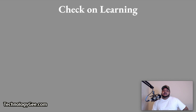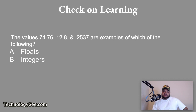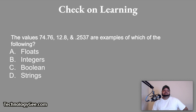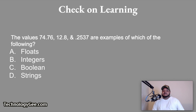Let's do some check on learning, ladies and gentlemen. The values 74.76, 12.8, and 0.2537 are examples of which of the following? Would it be a float, integers, Boolean logic, or string variables? The answer is these are floats. Remember, floats represent decimal numbers. When you think of the word float, just think of decimals.